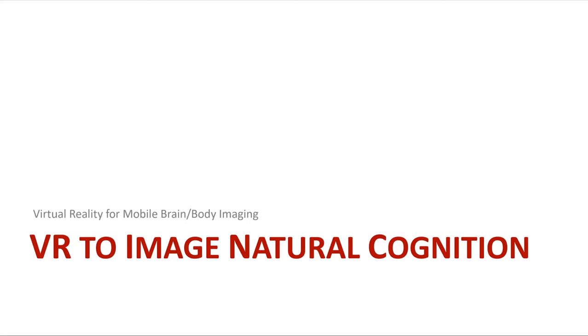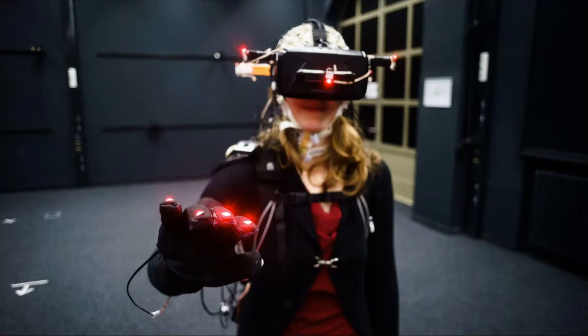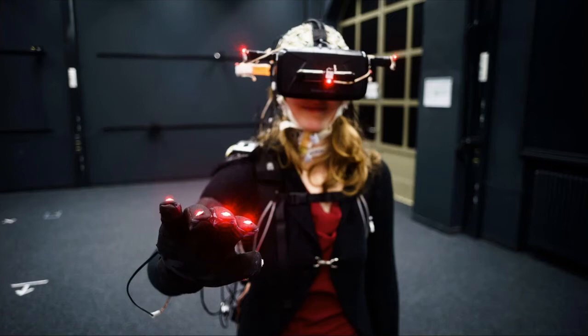We mean cognition that makes use of our physical structure — an embodied cognition approach — and that is also embedded, in the sense that we allow participants to interact with environments, changing aspects of the environment as part of the cognitive processing chain. Head-mounted virtual reality offers several advantages here. But let me start with the general idea of mobile brain-body imaging — why we want to do that and how we do that.